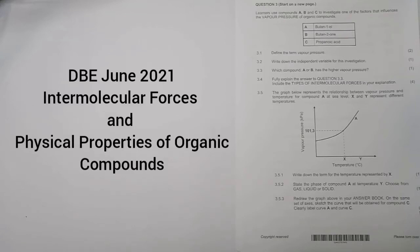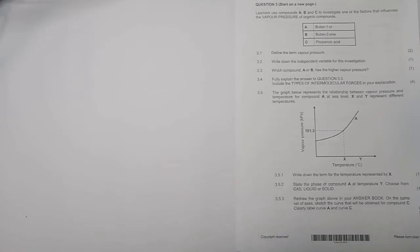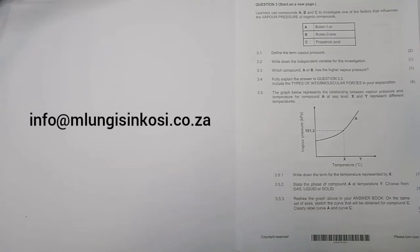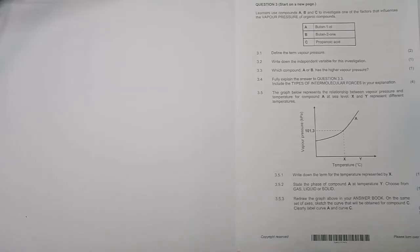Good day everybody, we are back again continuing with the DBE 2021 June paper, looking at question three. If you haven't subscribed, please be part of the family. For those who need assistance in mathematics or physical science, you're welcome to get in touch with us — our email is info@mlungesinkosi.co.za. You can get this paper from the DBE website; it's the Senior Certificate exam from 2021.